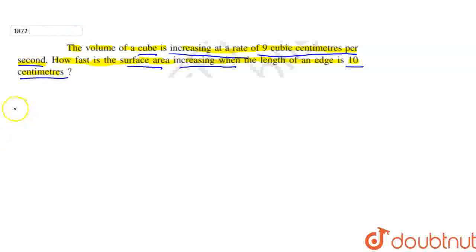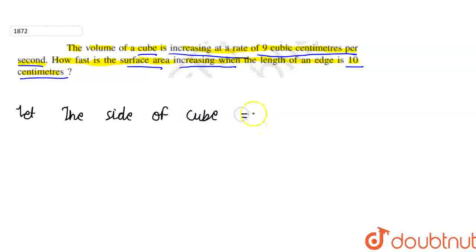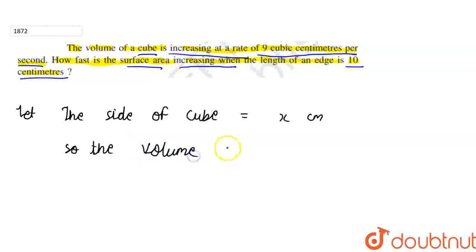For this question, let the side of the cube be equal to x centimeters. So the volume V is equal to x³. Here we have the formula: the side cubed gives us the volume of the cube.